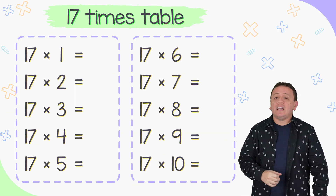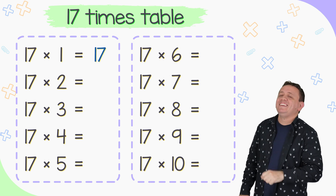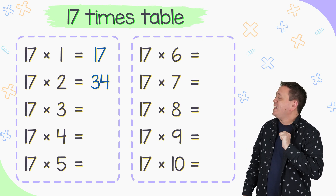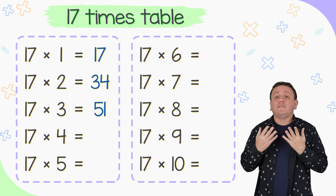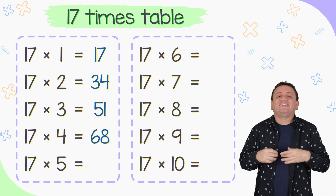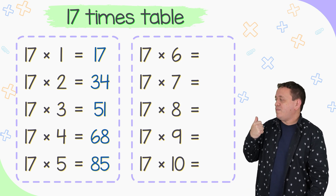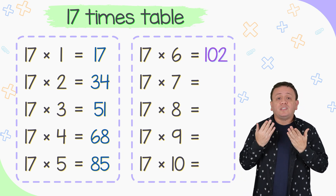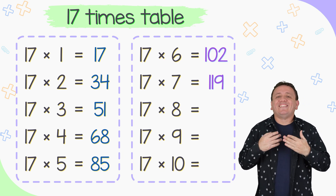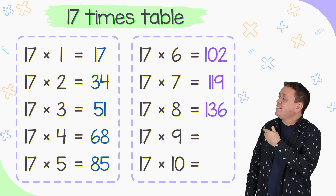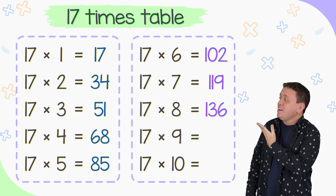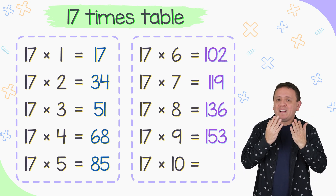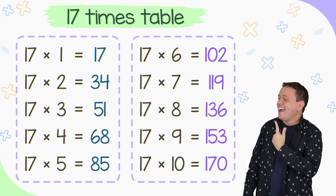Why don't we study the 17 times table. 17 times 1 equals 17. 17 times 2 equals 34. 17 times 3 equals 51. And 17 times 4 equals 68. 17 times 5 equals 85. 17 times 6 equals 102. 17 times 7 is equal to 119. 17 times 8 equals 136. 17 times 9 equals 153. Help me please — 17 times 10 is equal to 170.